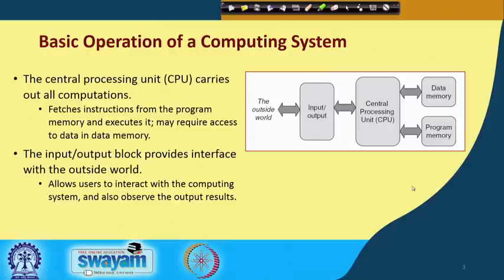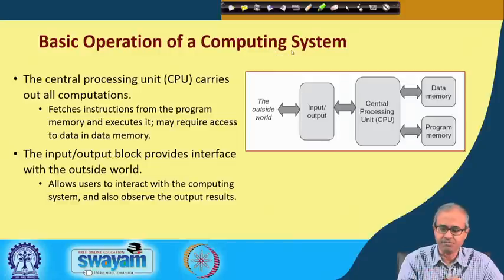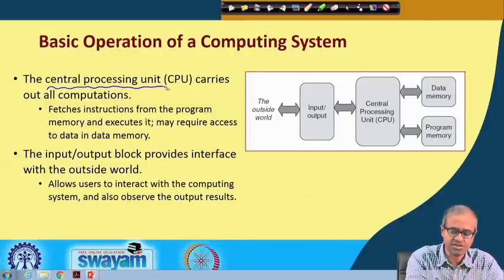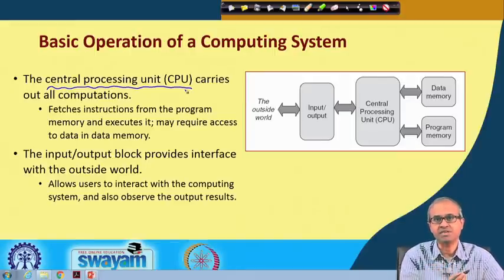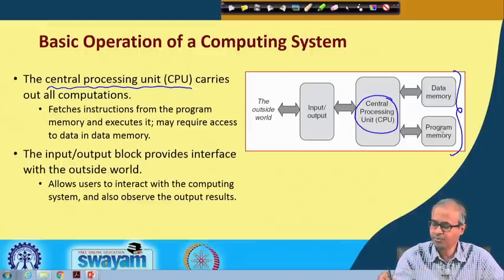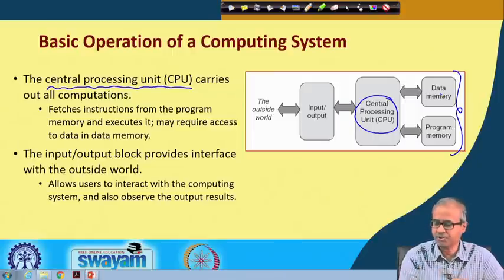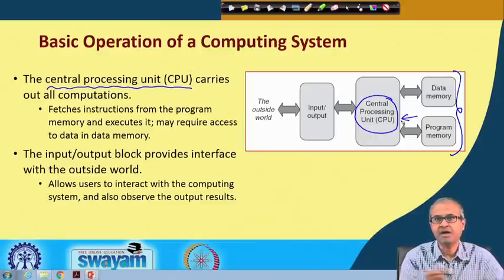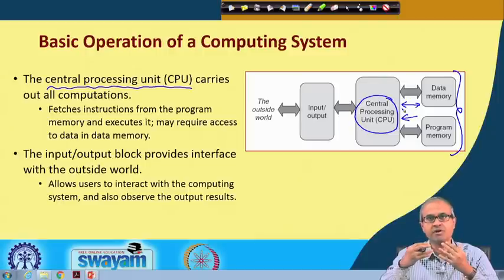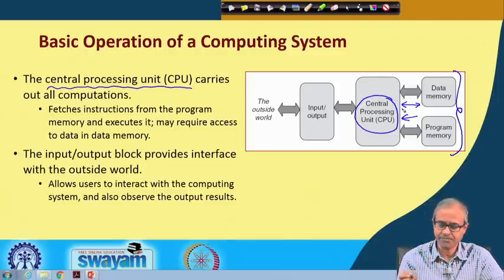Let us start with how a computer system works basically. With respect to a computer system, you may be knowing that there is something called central processing unit or CPU that carries out all computations or calculations. As you can see in this schematic diagram, the CPU is sitting in the middle and there are some memory where program and the data are stored. What the CPU does is it fetches instructions from the program memory one by one, executes them, and during execution it may require to transfer some data between the data memory either reading a data or writing the data back.